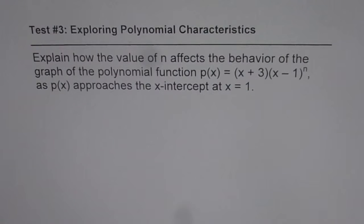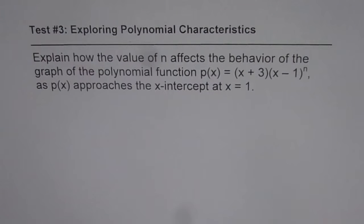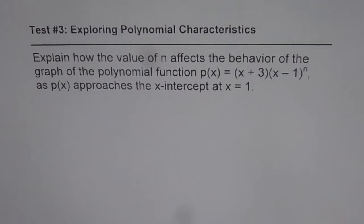I am Anil Kumar and here is a question from test unit 3 exploring polynomial characteristics. Explain how the value of n affects the behavior of the graph of the polynomial function p of x equals to x plus 3 times x minus 1 to the power of n, as p of x approaches the x-intercept at x equals to 1.